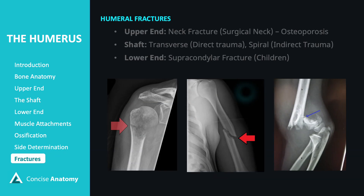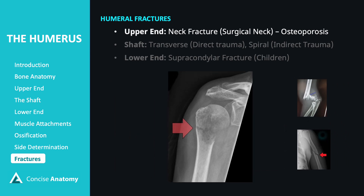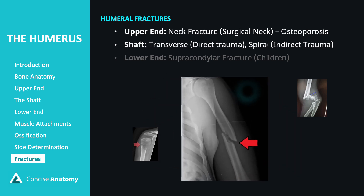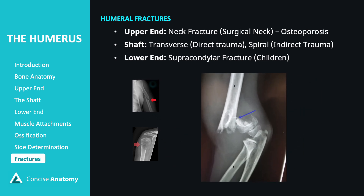Humeral fractures can affect various parts of the bone. At the upper end, fractures at the surgical neck are common and often linked to osteoporosis. In the shaft, fractures can be transverse, typically from direct trauma, or spiral, often due to indirect trauma. At the lower end, supracondylar fractures frequently occur in children, just above the condyles following falls from the outstretched hand.